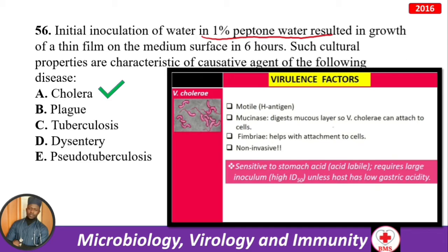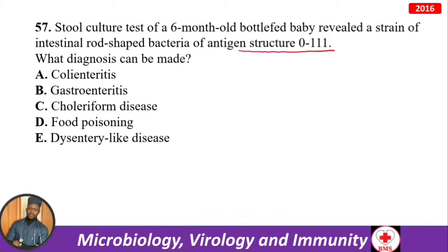Stool culture of a six-month-old bottle-fed baby revealed a strain of intestinal rod-shaped bacteria of antigen structure O111. The diagnosis is E. coli enteritis.